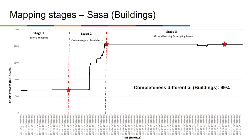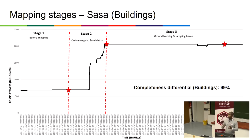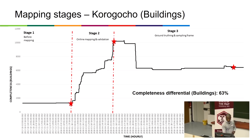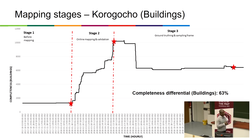For Shasha, the gap is very small, so the completeness differential in percentage terms is very high, suggesting that completing stage two is almost sufficient for stage-three work without necessarily going to the field. For Korogocho, which is the densest of the three, there is a wide gap of about 37% between stage three and stage two. A common pattern across all three areas is that the estimate at stage three is always less than that of stage two for buildings.